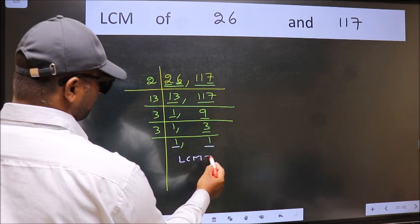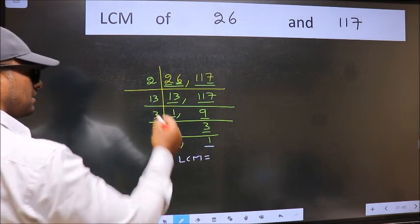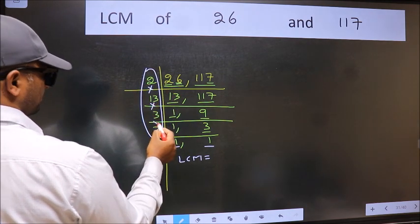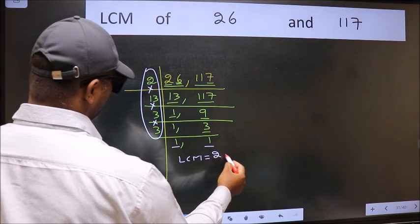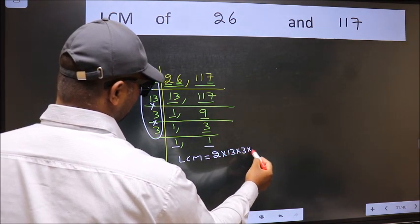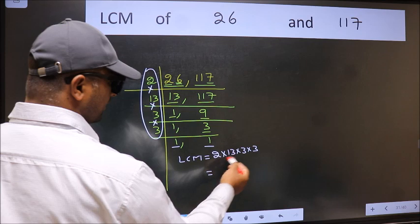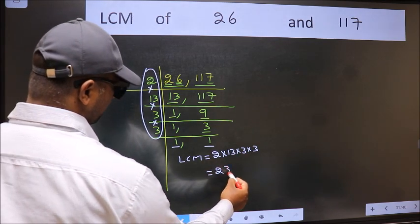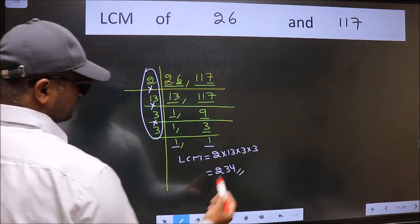So our LCM is, LCM is the product of these numbers. That is 2 into 13 into 3 into 3. When we multiply these numbers, we get 234 is our LCM.